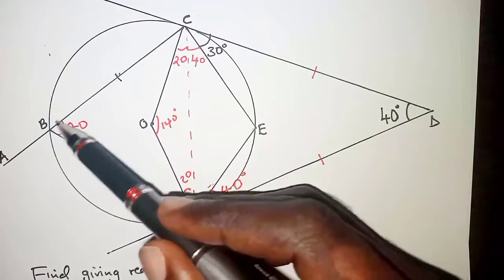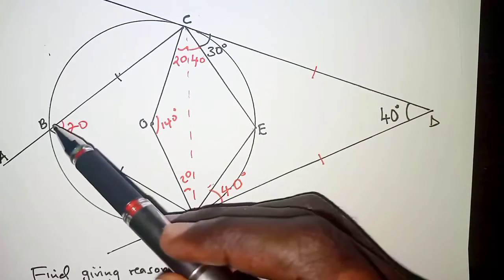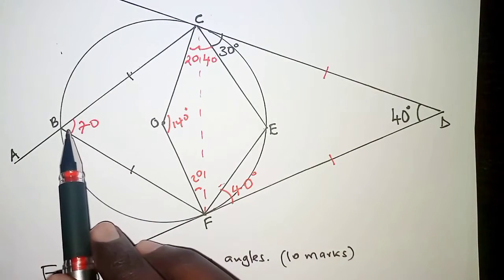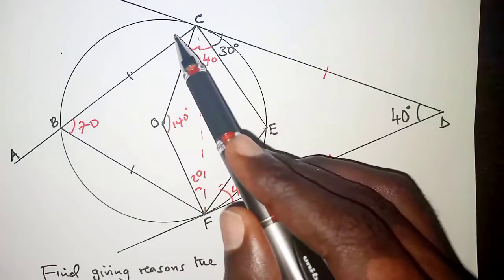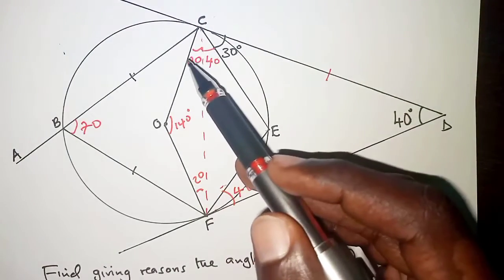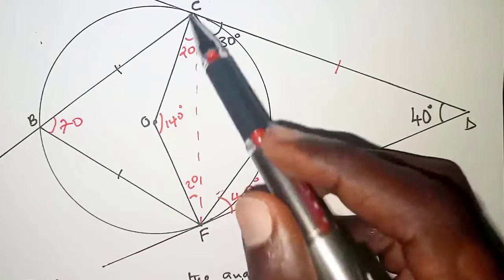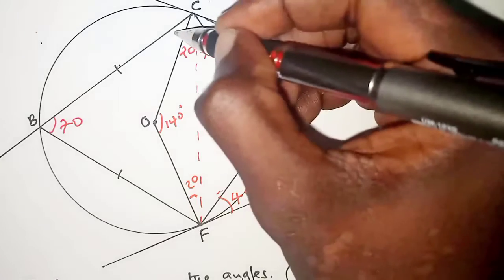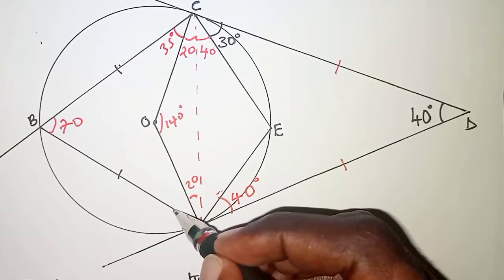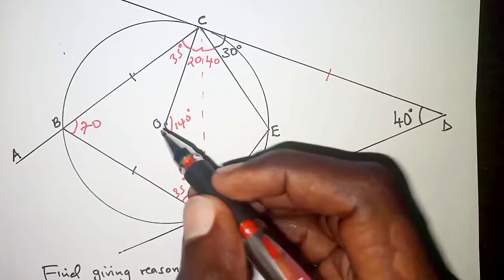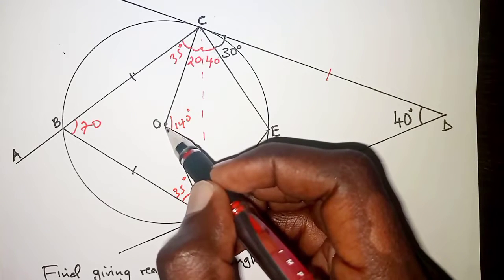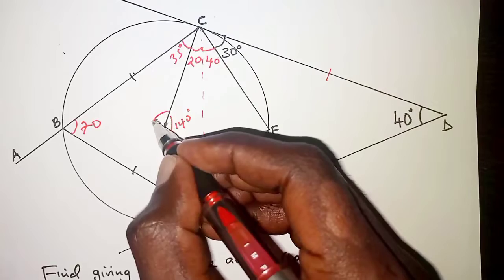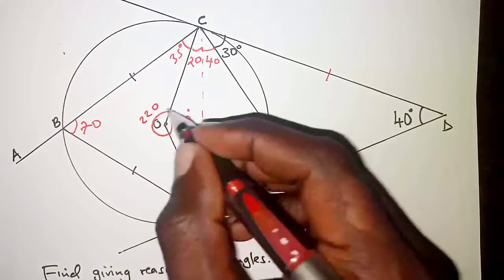BC is equal to BF, so triangle BCF is an isosceles triangle and its base angles are equal. The apex angle CBF is 70 degrees, leaving 110 degrees for the two base angles, giving 55 degrees each. Since the whole angle at C is 55 degrees, the remaining portion BCO is 35 degrees, and by symmetry the corresponding angle is also 35 degrees. Angles about a point add up to 360 degrees, so the reflex angle at O is 360 minus 140, which gives 220 degrees.